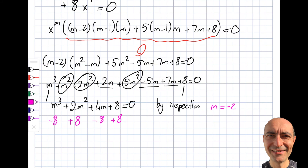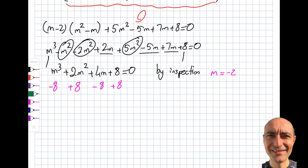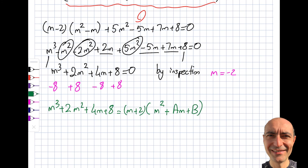So now I know that m³ + 2m² + 4m + 8 factors as (m + 2)(m² + am + b). You can set up three equations for coefficients and solve, but I take a shortcut: since the leading term m³ comes only from m·m², the coefficient must be 1, leaving two unknowns a and b.